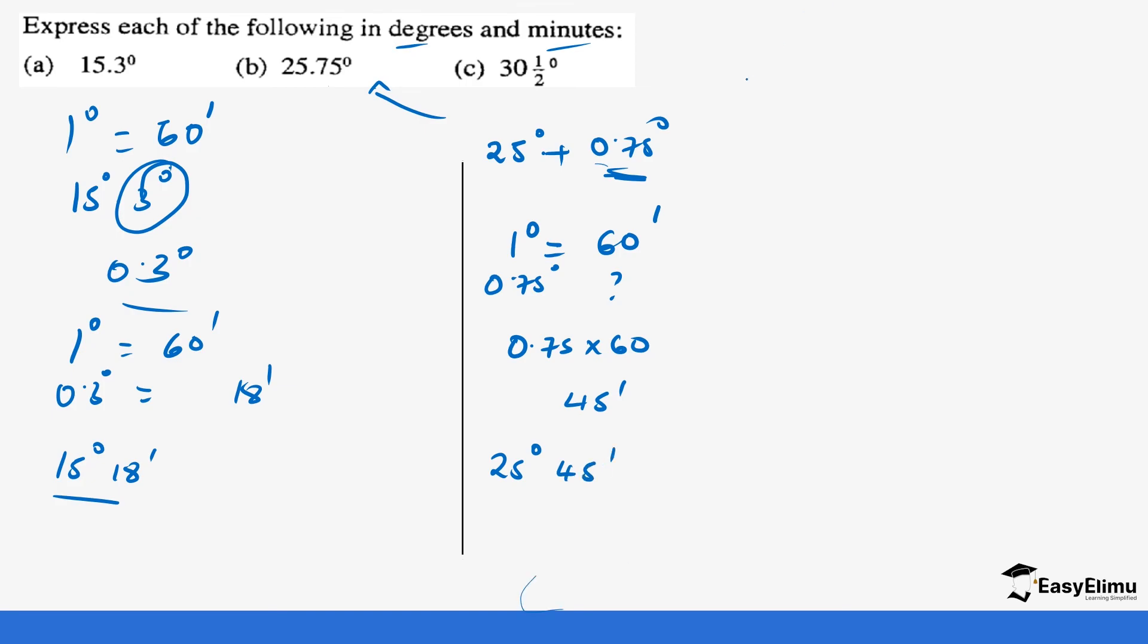Same case with 30 and a half degrees. This is the same as 30 point, because a half is the same as 0.5. So it's 30.5 degrees, this is 30 degrees plus 0.5 degrees. So you take the 0.5 bit and convert it into minutes. One degree equals 60 minutes, what about 0.5. This is 0.5 times 60, which gives you 30 minutes.